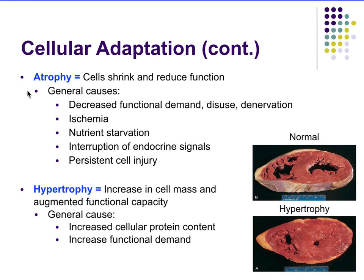Starting with atrophy — cells are shrinking because the demand on them has been reduced, so you don't really use the cell anymore. Think of muscles: when you exercise and lift weights, your muscles get bigger, but when you stop, they shrink because there's no need to maintain all that protein. So your cells will start to atrophy.